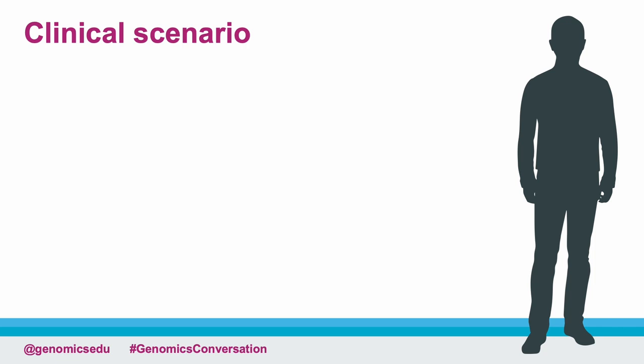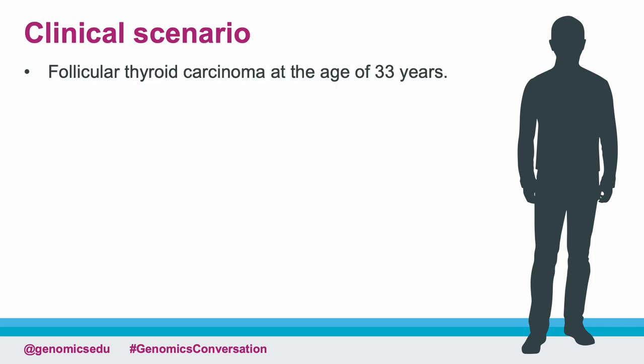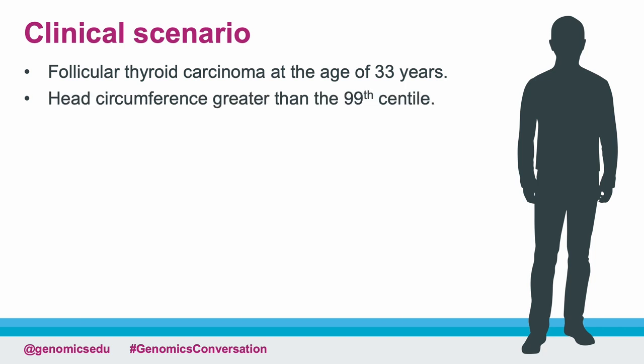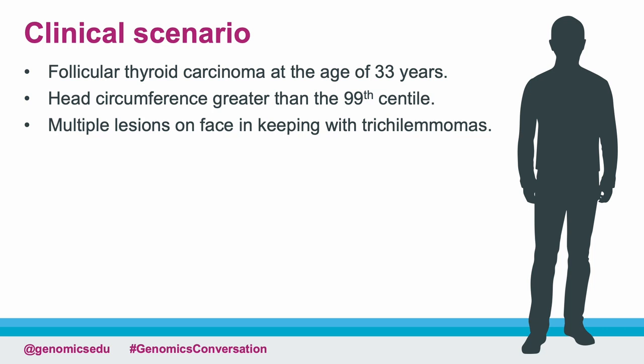Now let's try looking at a case. You see a patient in clinic who's been diagnosed with a follicular thyroid carcinoma at the age of 33 years. On examination, you note that their head circumference is greater than the 99th centile and they have multiple lesions on their face in keeping with trichilemmomas. You are concerned about a potential diagnosis of PTEN hamartoma syndrome and wish to undertake genomic testing. When completing the request form, you are required to provide the HPO terms to describe the patient's phenotype.